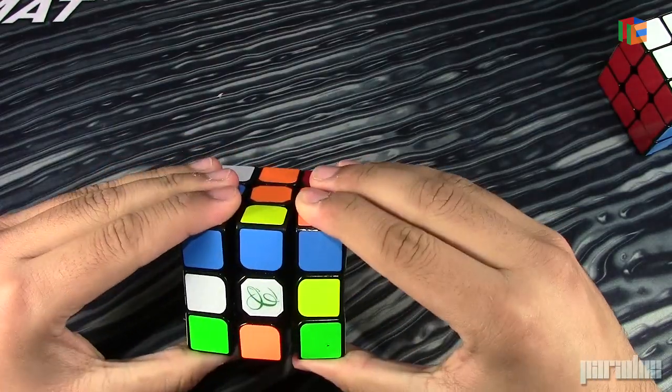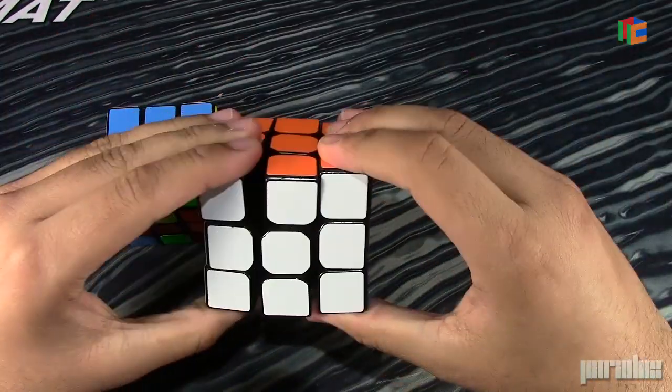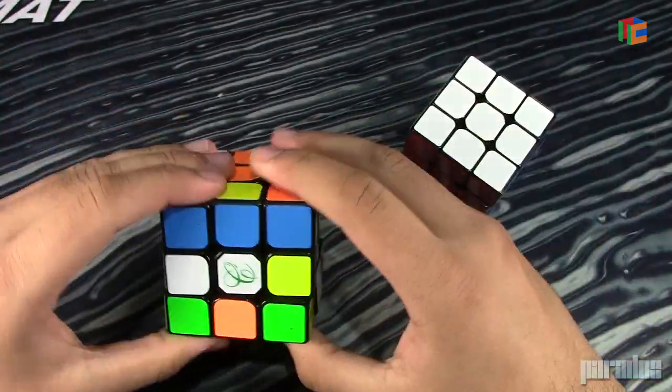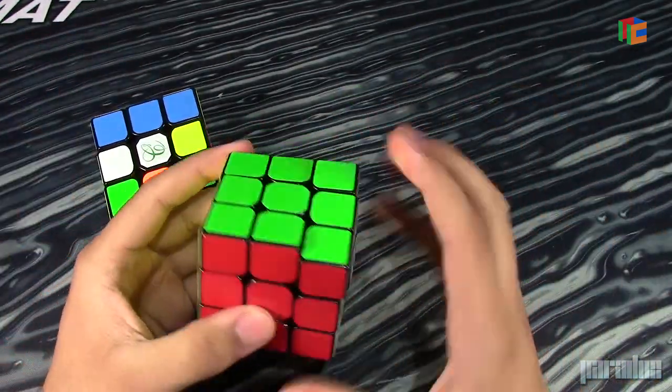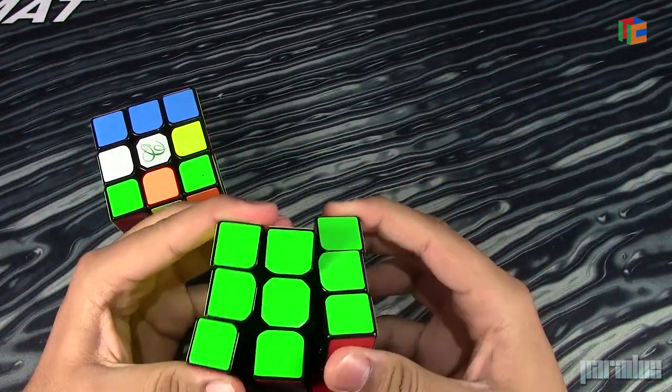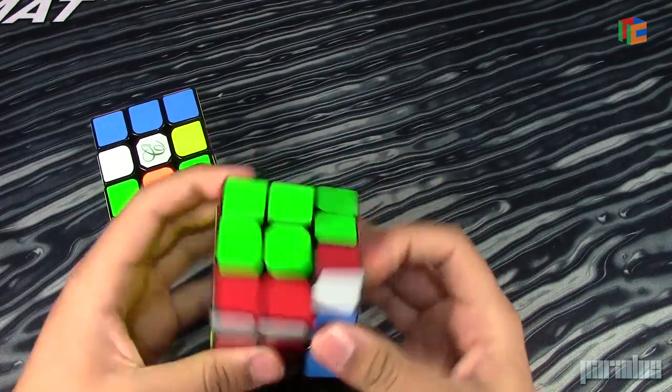What are the tensions like? Okay, so let's compare it to my Hualong. I have my Hualong on tighter tensions because I felt like my Hualong, it's more flimsy, and I keep getting random catches and stuff.